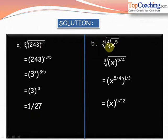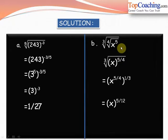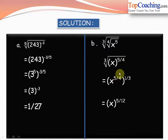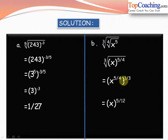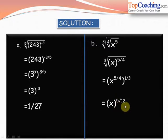Part b: simplify the third root of the fourth root of x to the power of 5. The fourth root of x to the power of 5 equals x to the power of 5 by 4, so we have the third root of x to the power of 5 by 4. This equals x to the power of 5 by 4 whole to the power of 1 by 3, since the third root equals 1 by 3. Multiplying the exponents gives x to the power of 5 by 12.